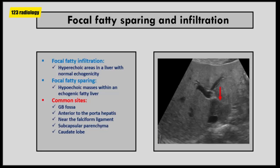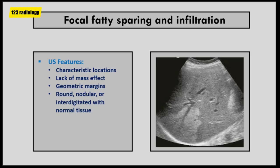Focal fatty changes may mimic a focal neoplastic lesion; however, ultrasound characteristics of the focal fatty pattern may differentiate the two entities. Focal fatty changes have characteristic locations, lack of mass effect, and hepatic vessels are not displaced. They also have geographic margins, but may appear round or interdigitating with normal tissue. As you can see in this case, there is an area of focal fatty infiltration in the right hepatic lobe, seen in the subcapsular parenchyma showing geographic margins, with a hepatic vein passing through it with no mass effect.